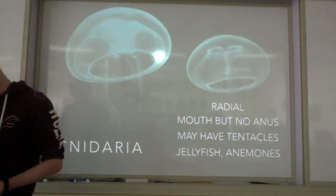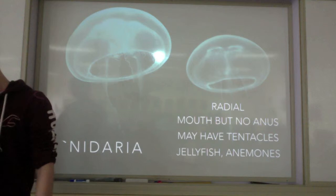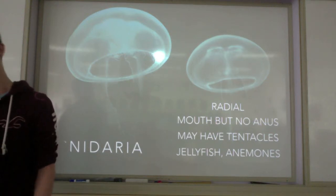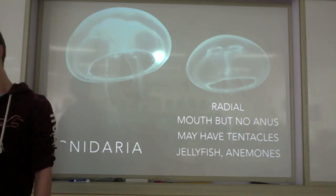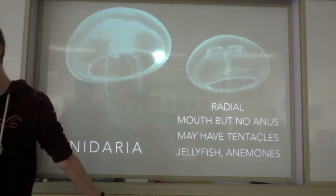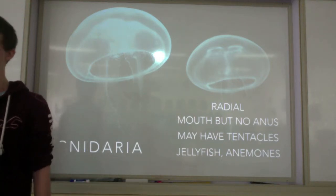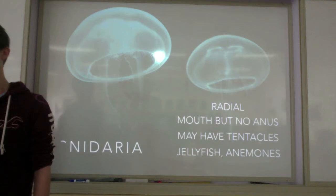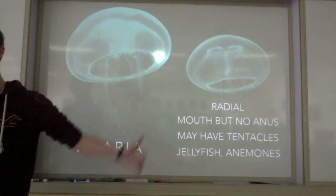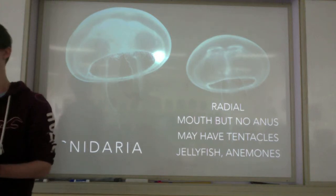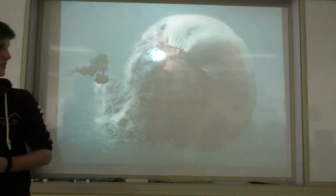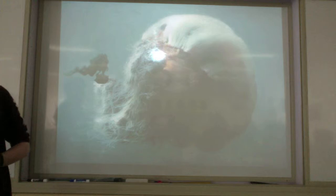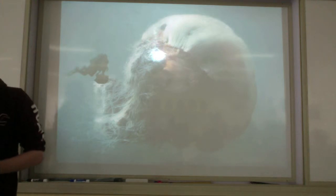Next we have Cnidaria, which are the jellyfish. They have radial symmetry, a mouth but no anus, and a defining feature is that they may have tentacles. Examples are jellyfish and anemones. A fun fact: the largest jellyfish ever recorded was a lion's mane jellyfish in 1870 in Massachusetts Bay — 2.3 meters in diameter, and its tentacles were 35 meters long. That is scary.